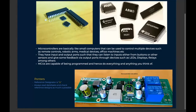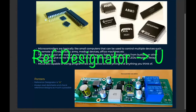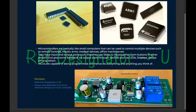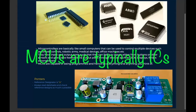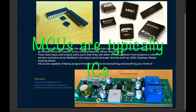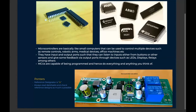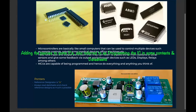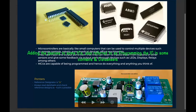The reference designators for MCUs are typically 'U', the same as for ICs, because an MCU is essentially a type of IC — but one that has its own logic and can be programmed. Most ICs that are not MCUs cannot be programmed; they just work with external resistors and capacitors.